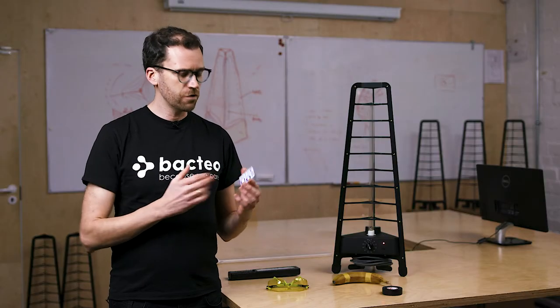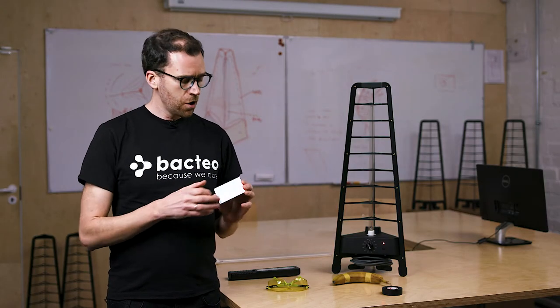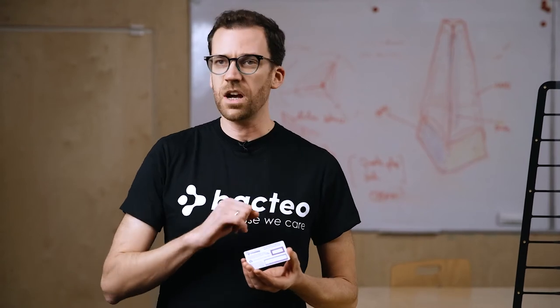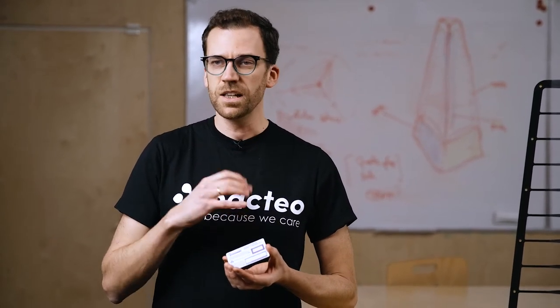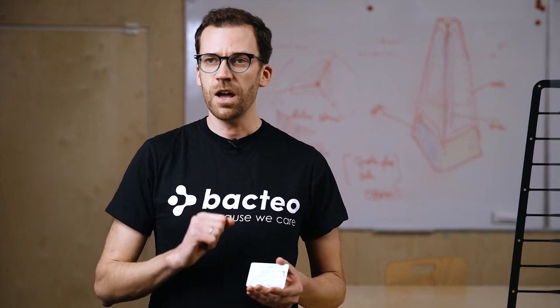The second way that you can check you've got a genuine UVC lamp is with one of these, a UVC indicator card. These are really simple to use and you can reuse them multiple times. All that happens is when this card is exposed to genuine UVC light, you'll see the letters UVC light up in green. Let me show you now how that's going to work.